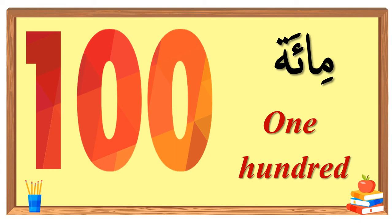If you want to say one hundred and one, you say 101, 102, 103, 104, 105, 106, 107, 108, 109, 110, 111, 113, 114, 115, 116, 117, 118, 119, 129 — like this, and you continue. It's really easy.